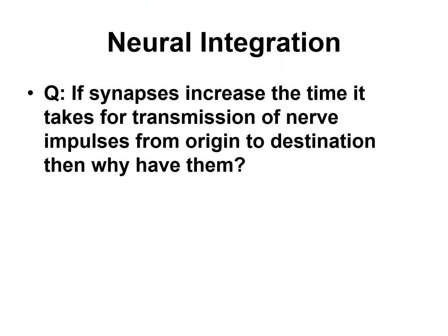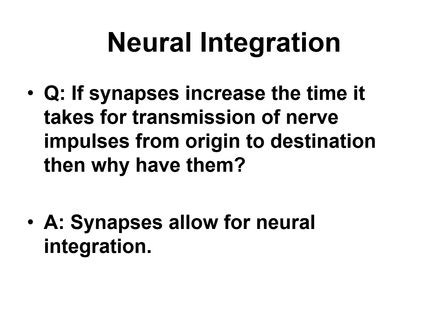So the obvious question is: if synapses increase the time it takes for transmission of a nerve impulse from origin to destination — if those synapses really take a lot of time for one neuron to communicate with a receiving neuron or for a sending neuron to communicate with a muscle cell — why have them at all? Why not just let an action potential move directly to the receiving neuron or muscle cell? The answer is these synapses allow for neural integration.